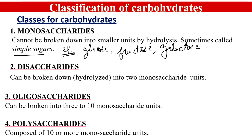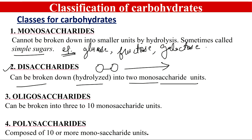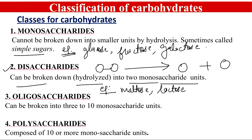The next class is disaccharides. Disaccharides are carbohydrates that contain two monosaccharide units attached to each other via a bond. They can be hydrolyzed into their two individual monosaccharide units. Common examples we will look at include maltose, which is present in malt sugar; lactose, which is present in milk sugar; and sucrose, which is the table sugar we use at home, obtained from sugar cane.